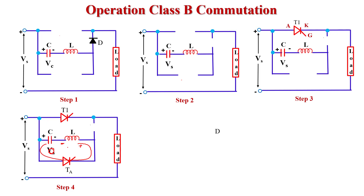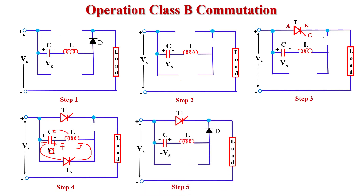When the inductor is fully charged, it starts discharging and changes its polarity — the terminal polarity reverses and the inductor delivers energy back to the capacitor. The capacitor then charges from zero to minus VS voltage, with one plate positive and the other plate negative. When the capacitor charges to this polarity, the positive plate makes diode D forward biased (short circuit), and the negative plate makes TA thyristor reverse biased, turning TA off.